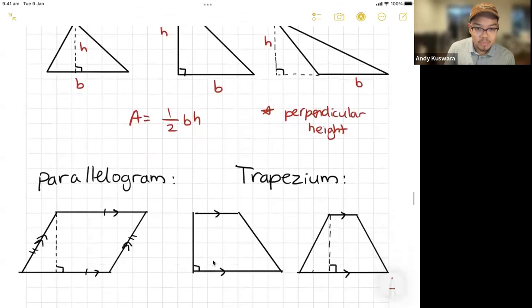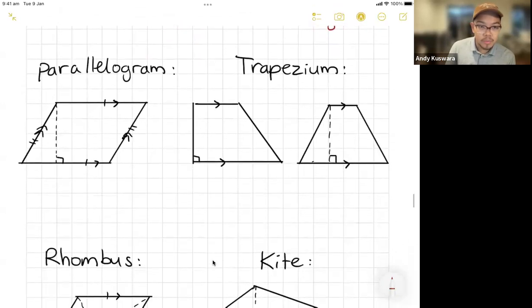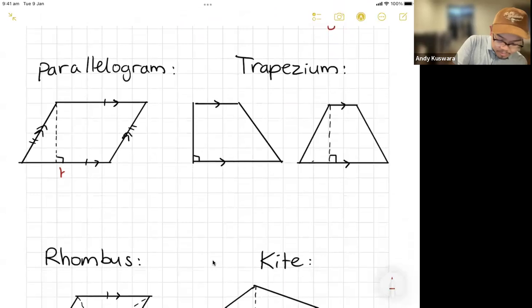It's the perpendicular height. Okay. We've got a couple more shapes. We've got the parallelogram and the trapezium for a parallelogram. The area here is base times height.